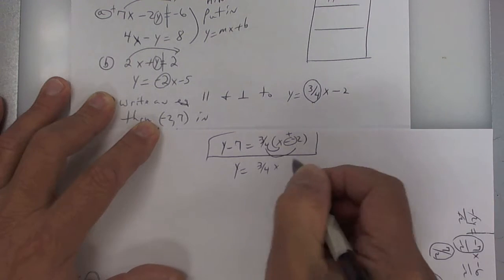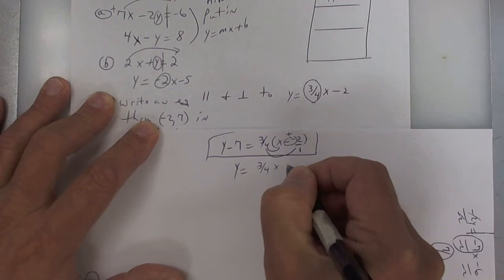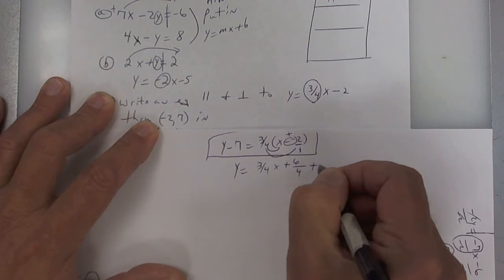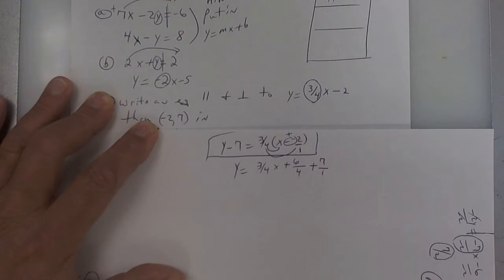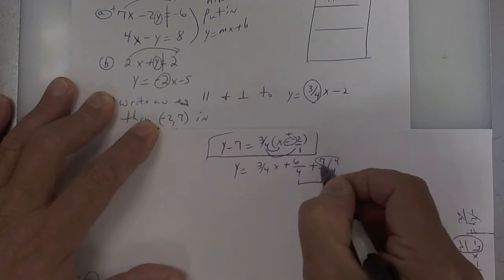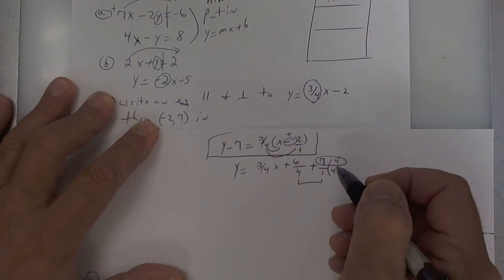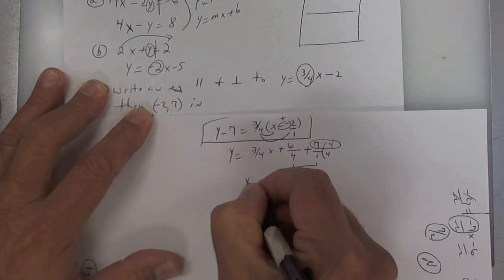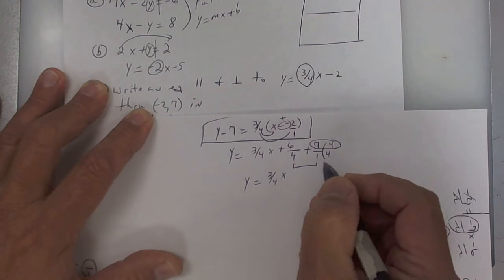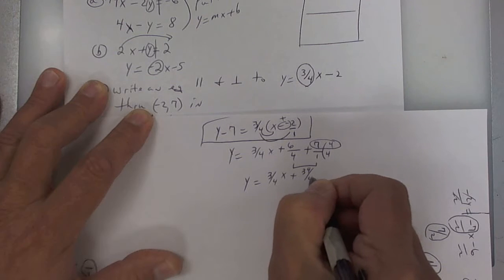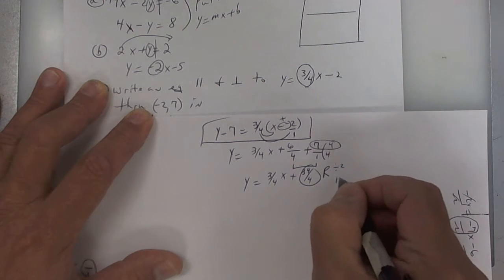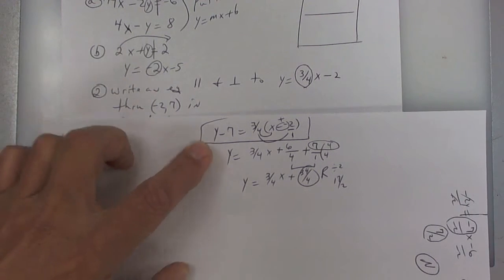So you get 3 over 4x. Put a 1 underneath, so 3 times 2 is 6, plus 6 over 4. Then move the 7, making it plus 7 over 1. Your common denominator is 4, so multiply by 4, giving you 28 over 4 plus 6, which is 34. Your final answer in slope intercept form is 3 over 4x plus 34 over 4. Reduce by 2, so both divided by 2 gives you 17 over 2.